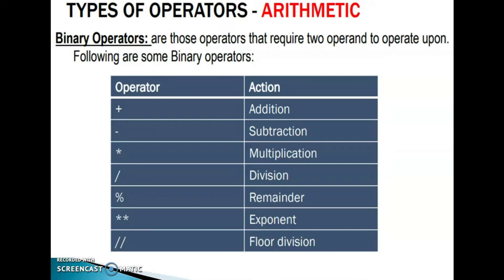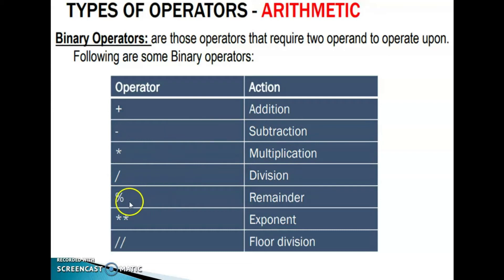First type: arithmetic operators. Binary operators are those operators that require two operands to operate upon. The following are some binary operators: plus (addition), minus (subtraction), star (multiplication), slash (division), modulus (remainder), double star (exponent), and double slash (floor division).